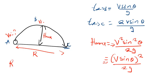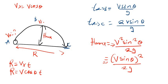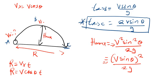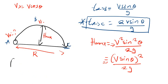Another formula is how to find the range. Range is given by Vx times T. Since Vx is V cos θ, you can say range equals V cos θ times T. We always use the time formula when finding the range. But in a case where you have not been given the time, the best formula to use is V² sin 2θ divided by G.